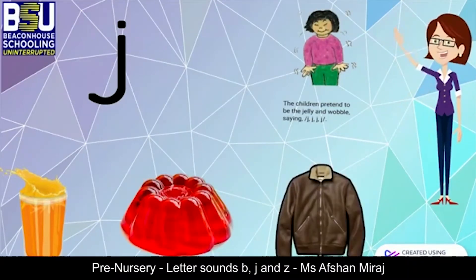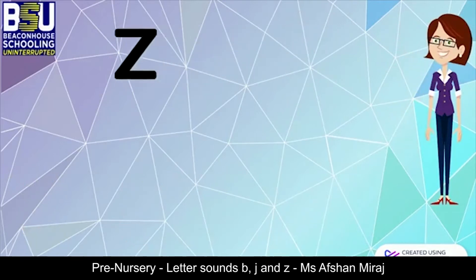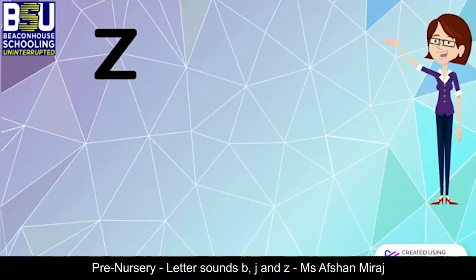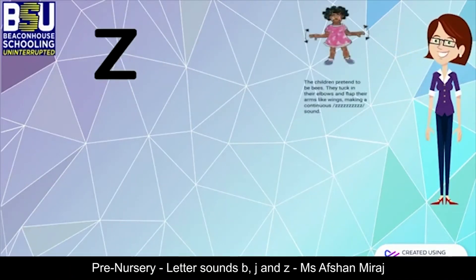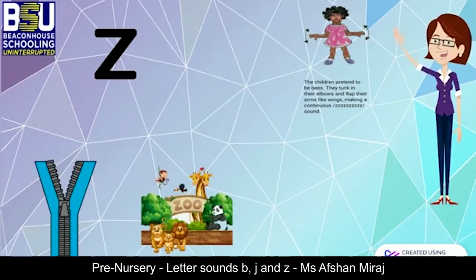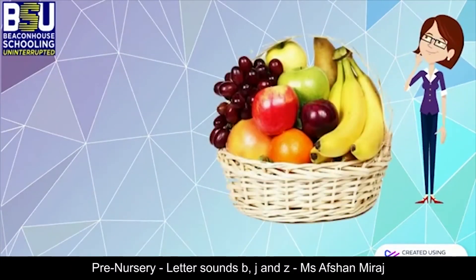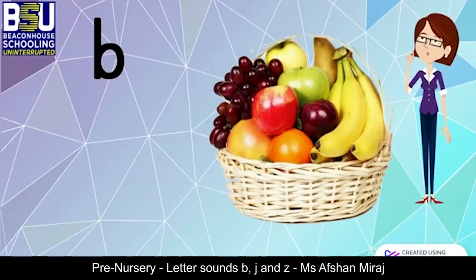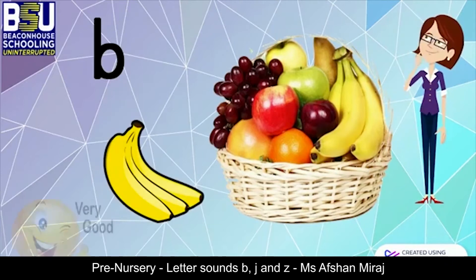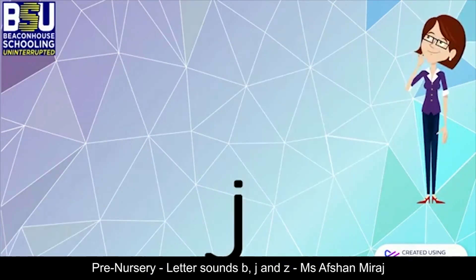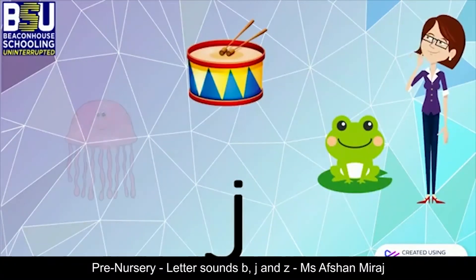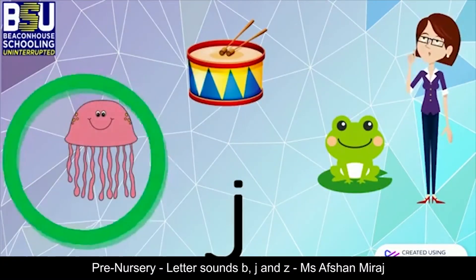Now tell me, which sound is this? Yes — Z, zip, zoo, zigzag. Now look at this fruit basket and name the fruit with the B sound. Perfect — banana! Now it's time to find and circle the object with the J sound. Great job!